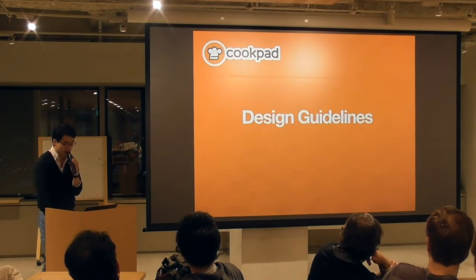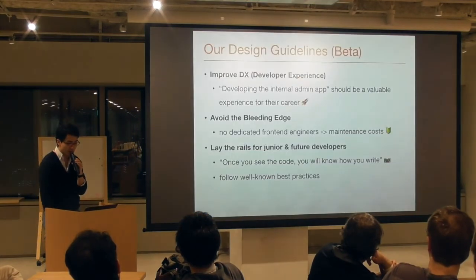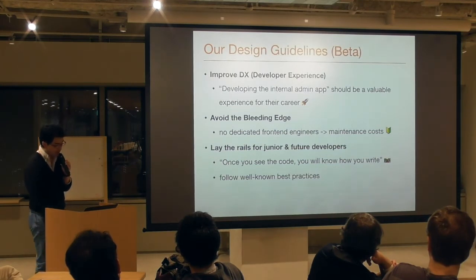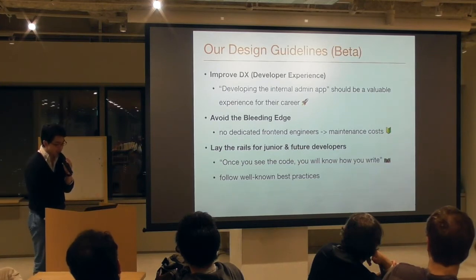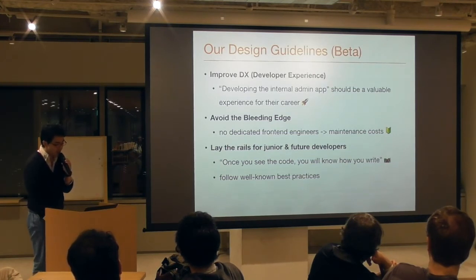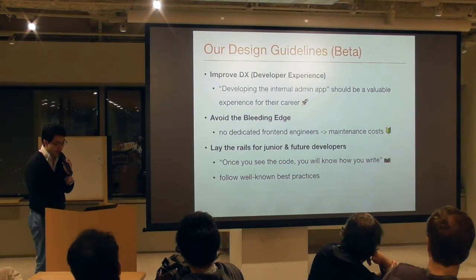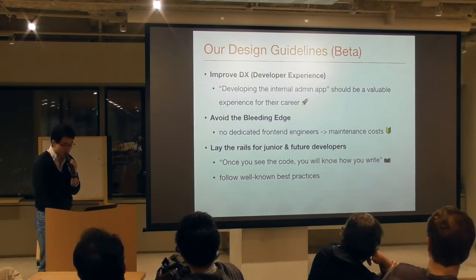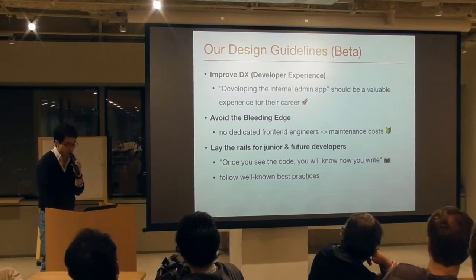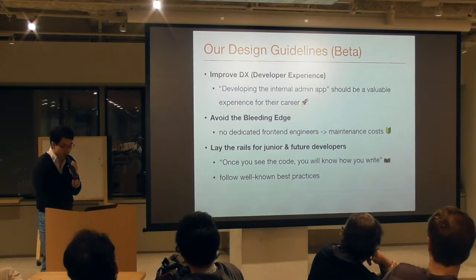We are also defining design guidelines. The key concepts are: first, design guidelines should improve our developer experience (DX) — developing the internal admin app should be a valuable experience for team members. Second, we avoid the bleeding edge: since there are no dedicated front-end engineers, we should take care of future maintenance costs, even thinking about when I leave this team. Lastly, I try to lay the rails for junior and future developers — the goal is that once you see the code, you know how to write it. To achieve this, we follow well-known best practices instead of reinventing the wheel.